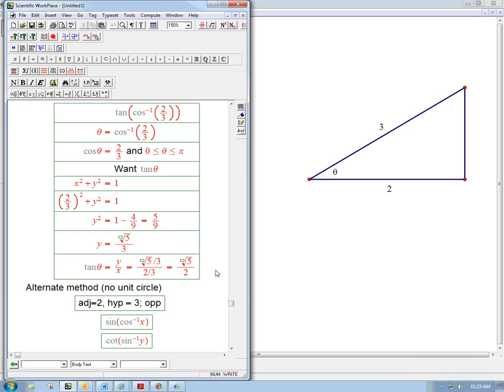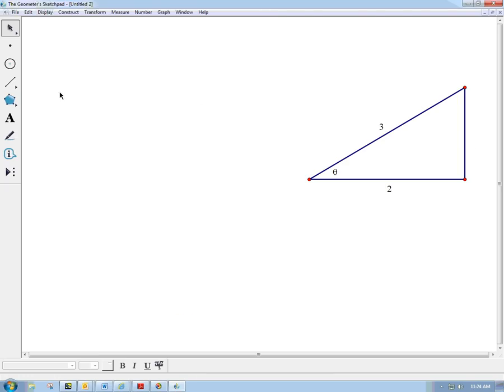So the opposite we get from Pythagoras, that's just going to be the square root of 3 squared minus 2 squared, which is root 5. Surprise, surprise, root 5 is coming in. So this guy here is just going to be root 5.